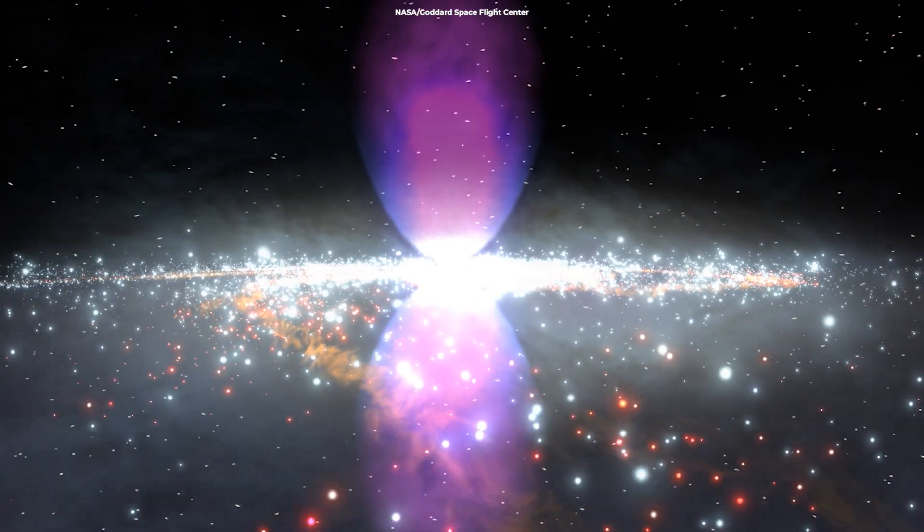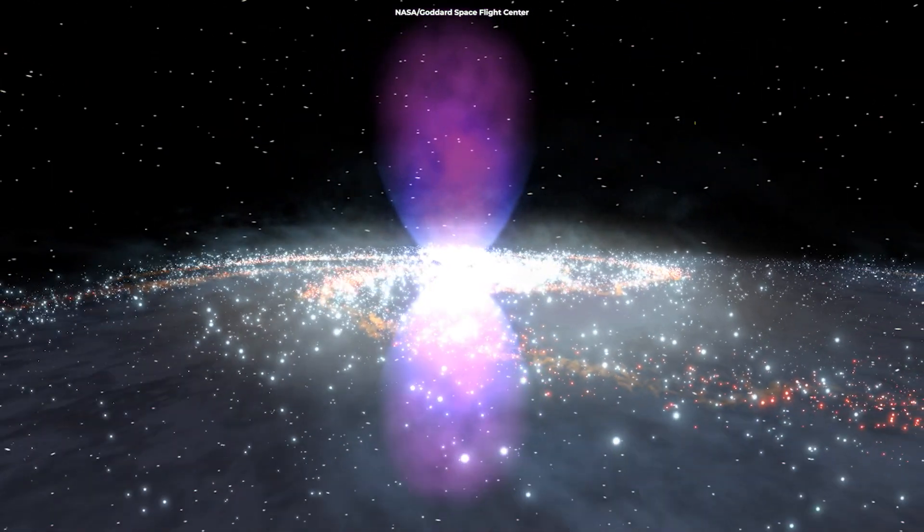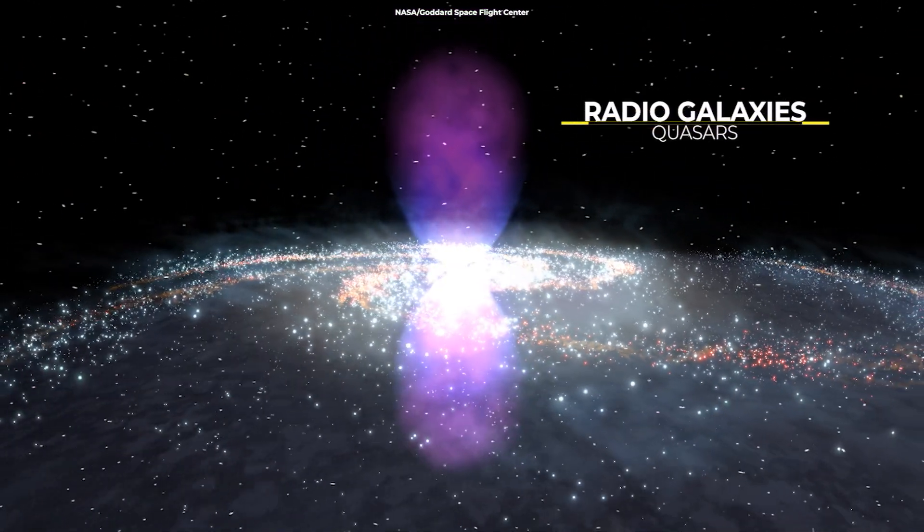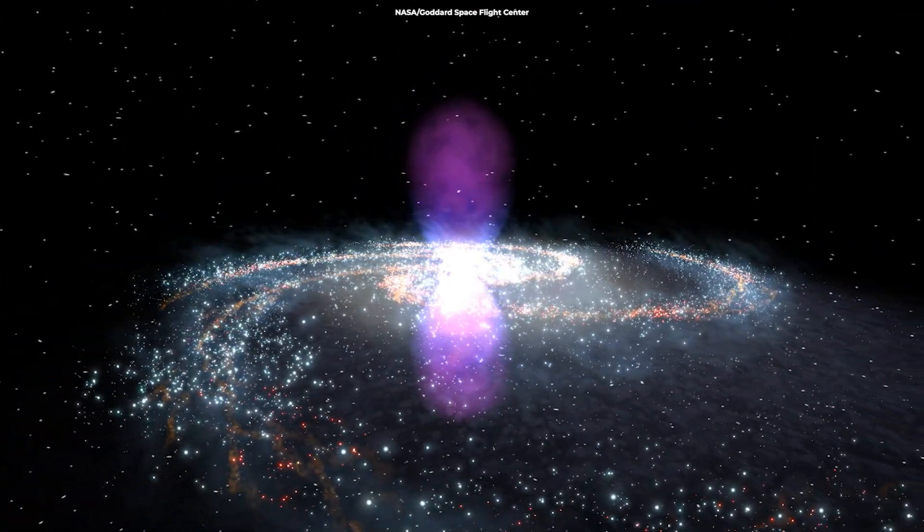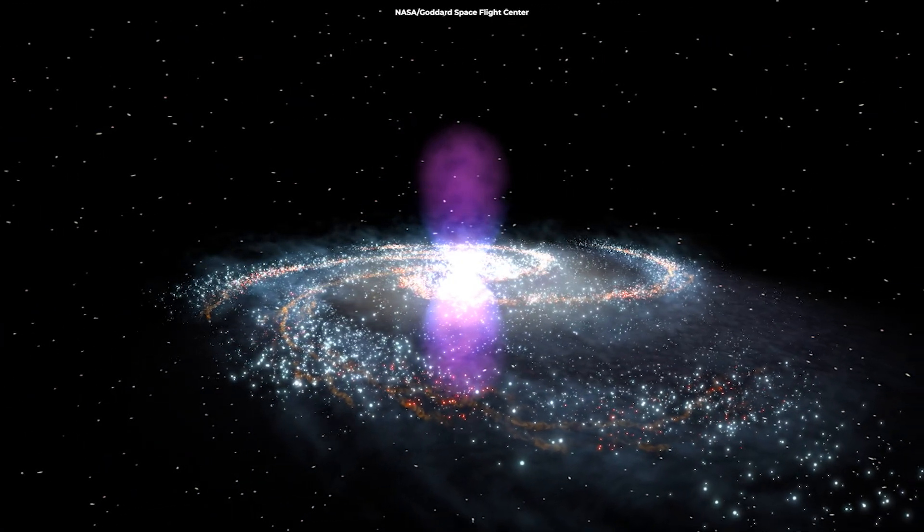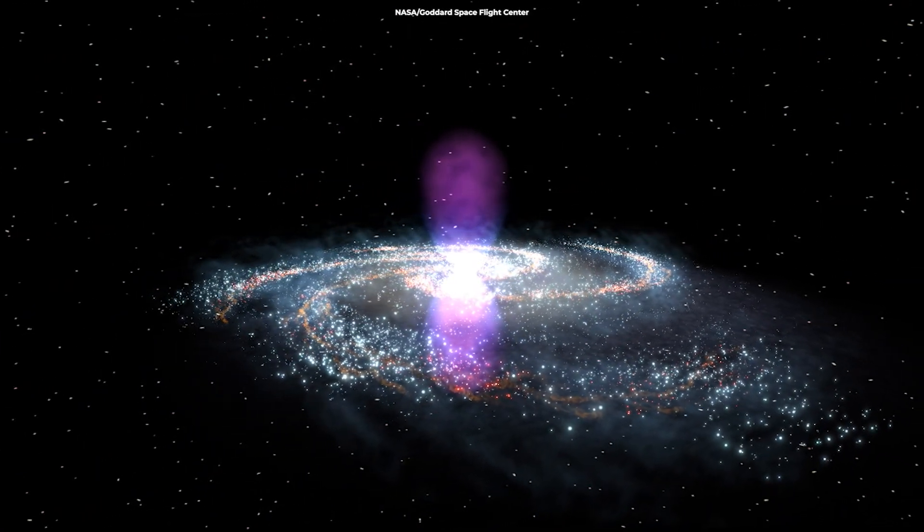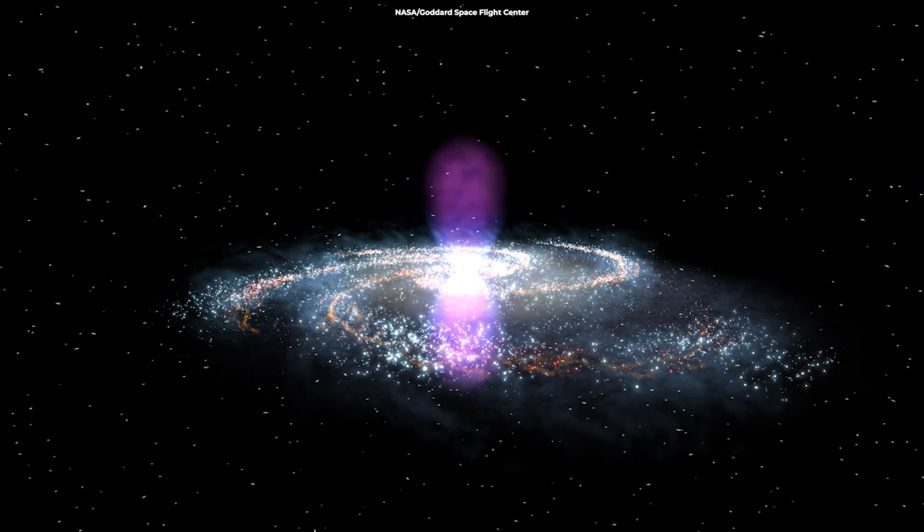Depending on how bright they are and how quickly they consume the stuff around them, they are known as radio galaxies or quasars. As these gigantic black holes grow to a billion times the mass of the Sun, their jets become powerful enough to sweep gas out of the galaxy, thus stopping the birth of new stars.